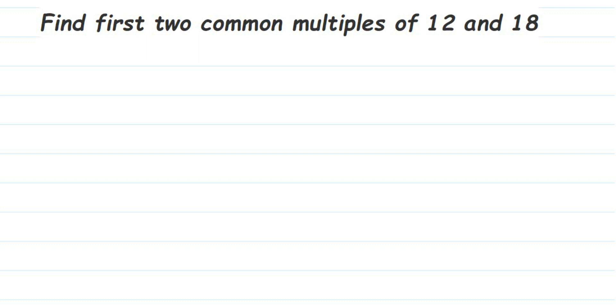Hey everyone, here's a question on multiples: find first two common multiples of 12 and 18. Multiples means you have to write down the table of the given number, like multiples of 12 will be 12, 24, 36, and so on. The numbers which come in a given table are the multiples. First, write down the multiples of each number, and then find out the common multiples.